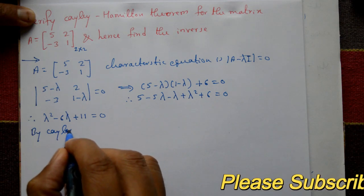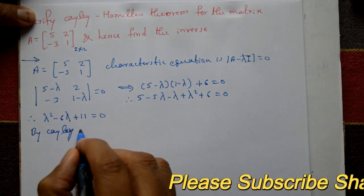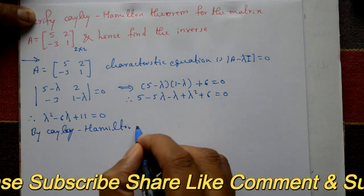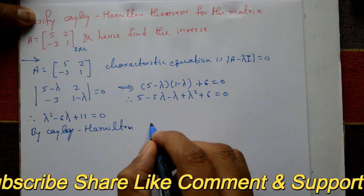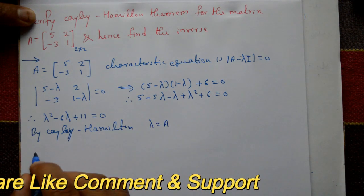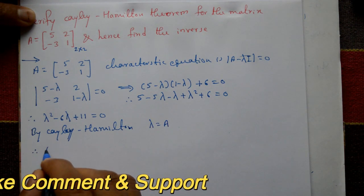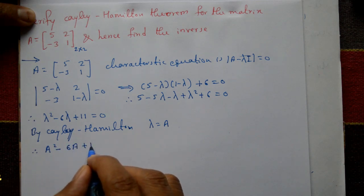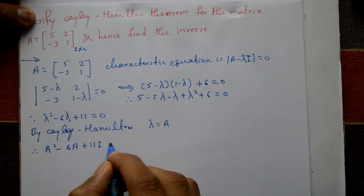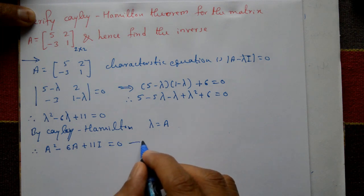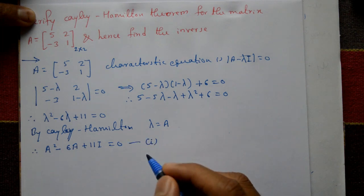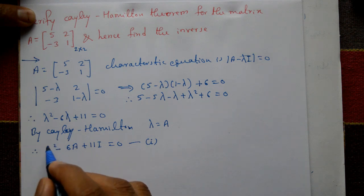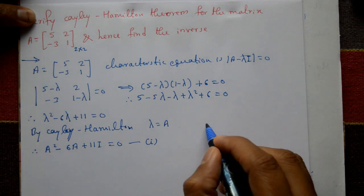To verify the Cayley-Hamilton theorem, replace λ with matrix A. Therefore A² - 6A + 11I = 0. This is equation number one. We now need to compute A².